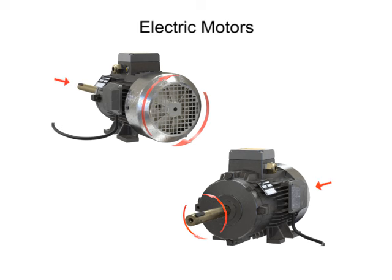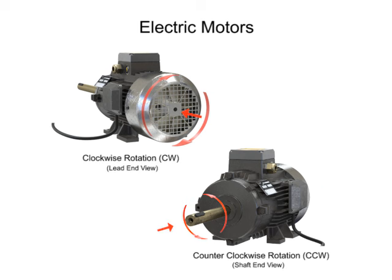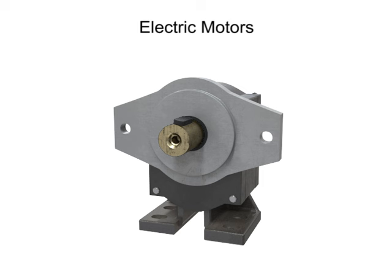In general, for most electric motors, rotation is specified as clockwise or counterclockwise when viewed from the opposite end of the shaft. This is sometimes called the lead end, since the electrical wires or leads typically connect on this end.